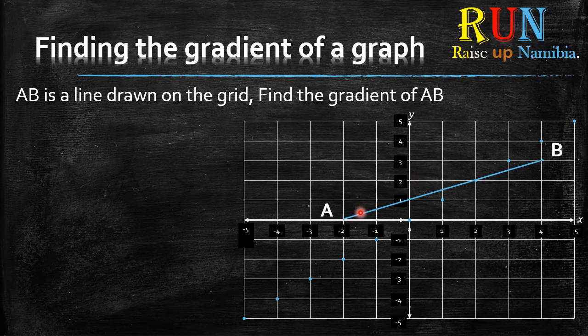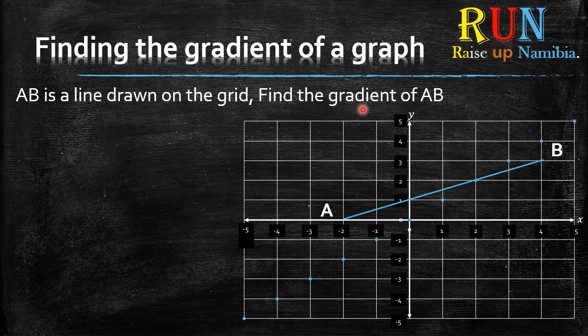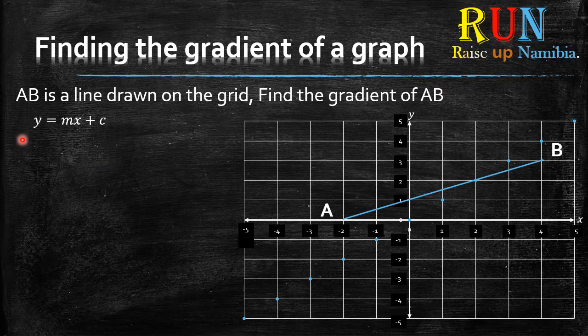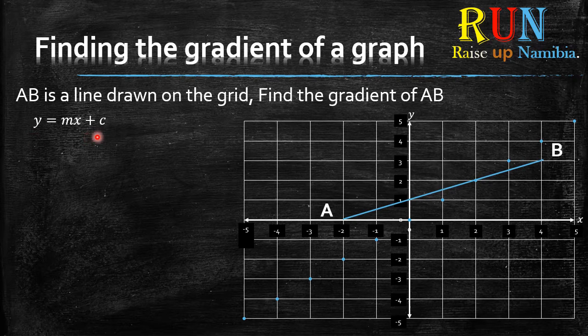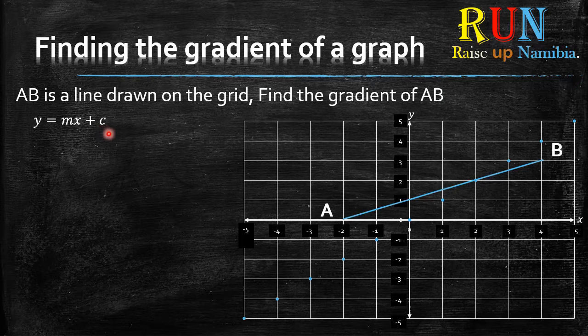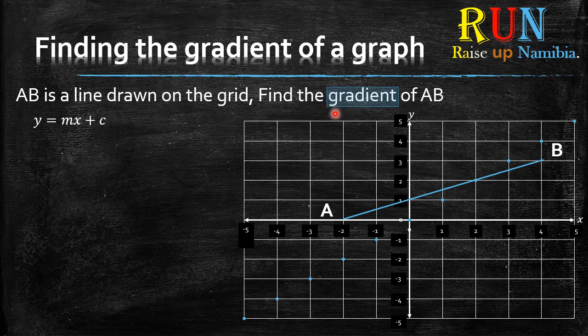Now, when we are talking about the gradient, what are we talking about? Since this line AB is a straight line, let's quickly look at this equation for the straight line, which is Y equals MX plus C. Each time you hear the word gradient, this simply means the M in this equation.